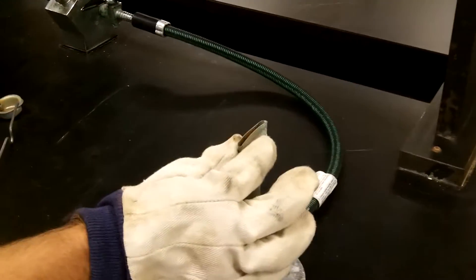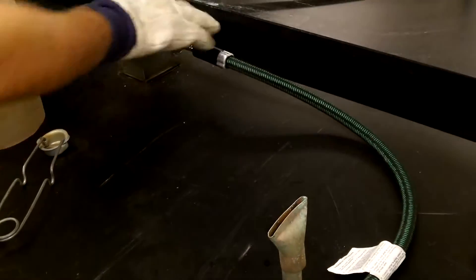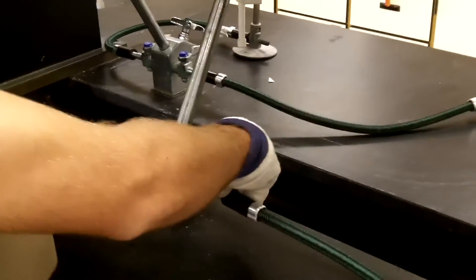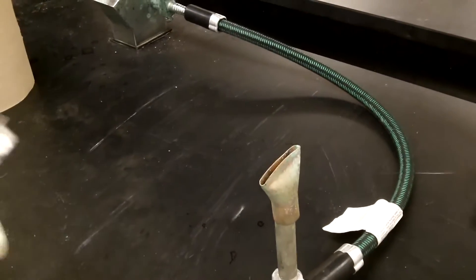To bend the glass tubing, put a wing tip on the end of the Bunsen burner. Then, turn on the gas, make sure the gas is coming out, and light it with a striker.